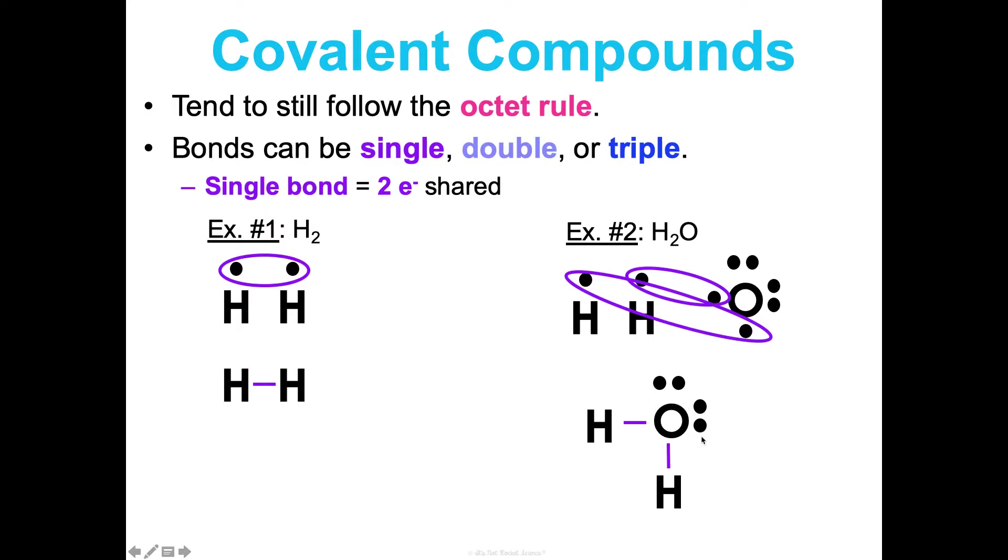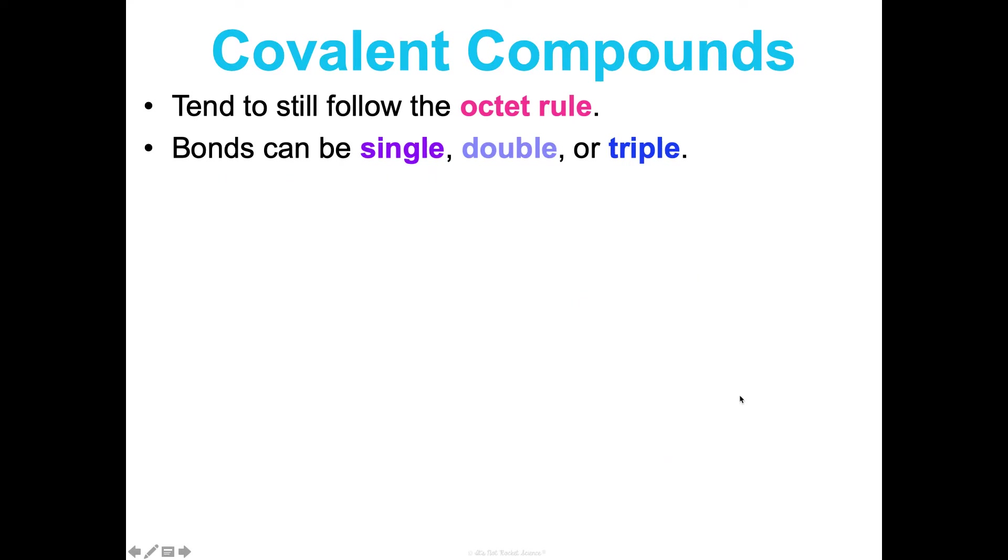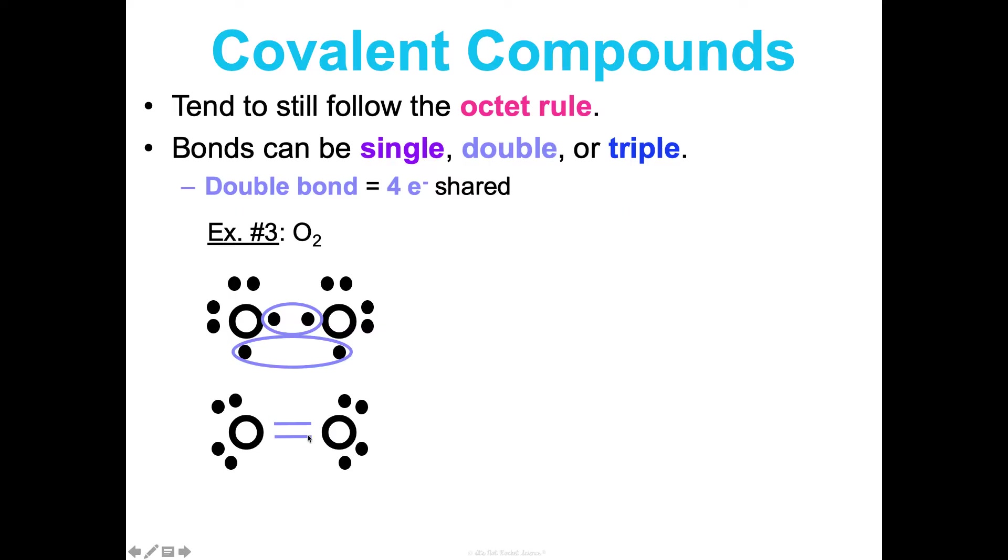They can also form double bonds, where you're going to share four electrons between two different atoms. Looking at O2, we draw the Lewis structures for each atom. Those would share and those would share, so that forms a double bond between these two oxygen atoms: two dashes representing four electrons shared. We see this similarly in carbon dioxide.